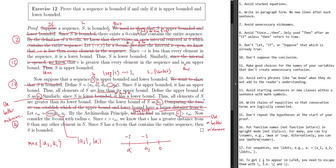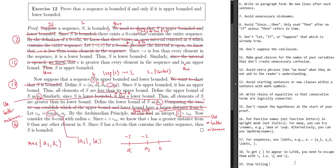'Now consider the zero coin' — we need to stop using 'consider.' That's number 19: stop telling me to consider things. In formal proofs it's very rare that we want to use 'consider.' We're not trying to educate or provide pedagogy; we're trying to convey the message in a clean, concise way. So we can probably just get rid of that sentence altogether. 'Since epsilon is greater than epsilon_m' — drop 'we know that' — that's the same issue. It follows that epsilon has a greater distance from zero than any other element in S.